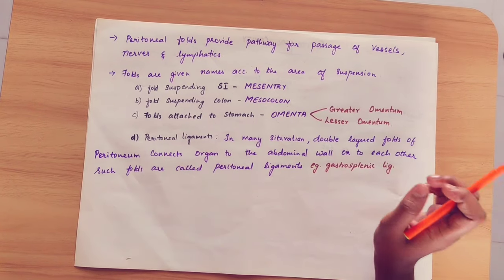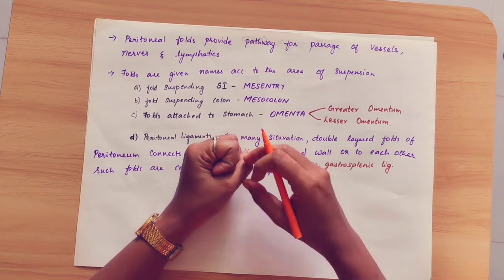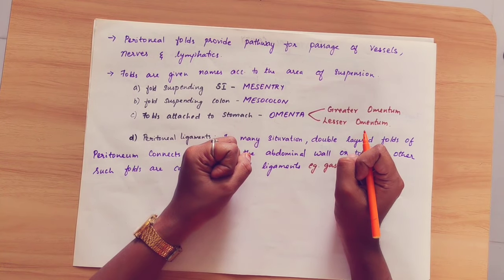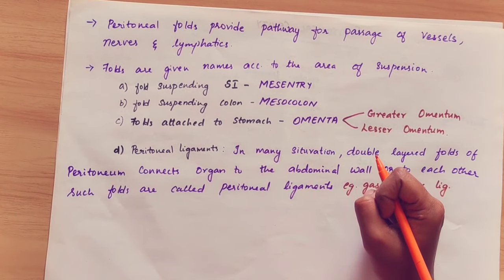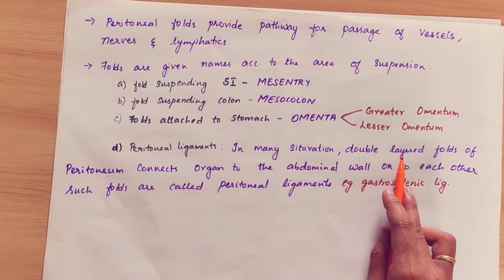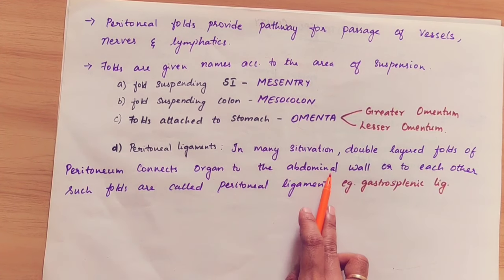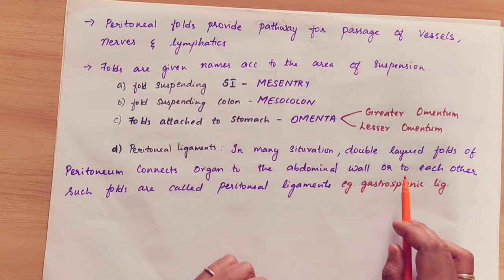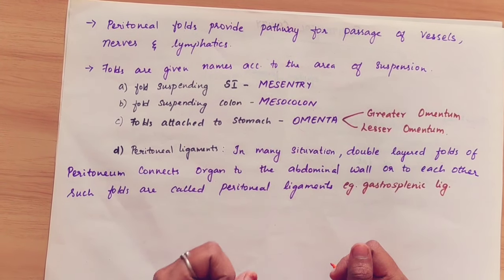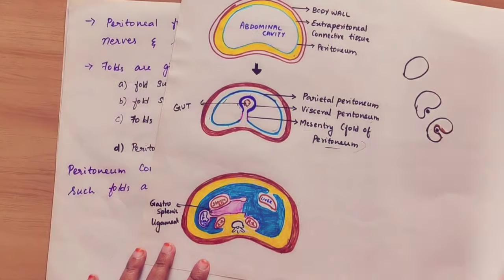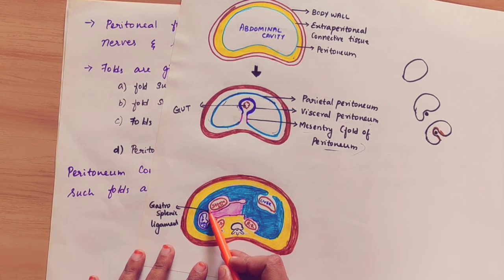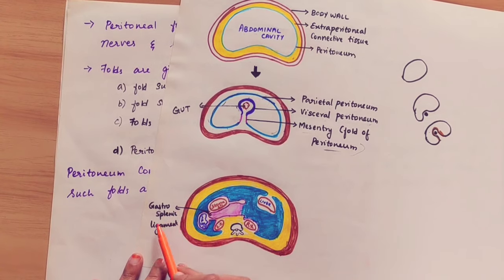Coming to peritoneal ligaments. When a double-layer fold of peritoneum connects one organ to the abdominal wall or connects one organ to another organ, we call it a peritoneal ligament. For example, the gastrosplenic ligament connects the stomach to the spleen — a double-layer fold between the stomach and spleen forms the gastrosplenic ligament.